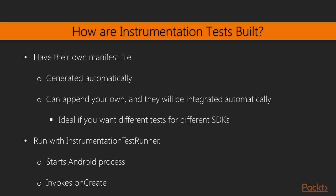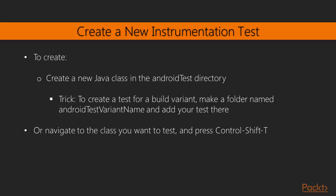How are instrumentation tests built? They have their own manifest file which is generated automatically. If you need to, you can make tweaks to this, because when it actually builds the testing APK it will merge everything together. Then it's going to run the tests with something called InstrumentationTestRunner, which will start the Android process and invoke the onCreate method — the method that initializes one of our activities. To create a new instrumentation test, navigate to the Android test directory and choose to make a new class.